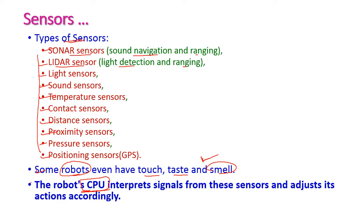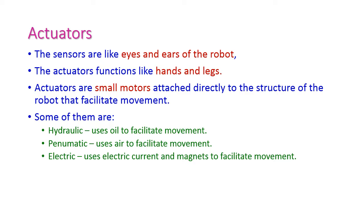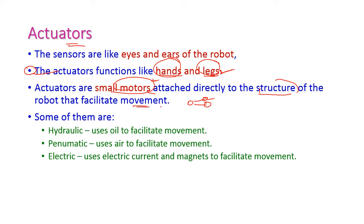The robot CPU interprets signals from these sensors and adjusts its actions accordingly — based on the input, actions are decided by the CPU. Activators are like the hands and legs of the robot, performing actions on the environment. Small motors are attached to the robot so it can move from one place to another or perform specific actions, and these motors are attached directly to the robot to facilitate movement using hydraulic, pneumatic, or electric mechanisms.